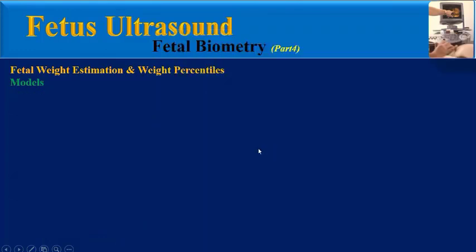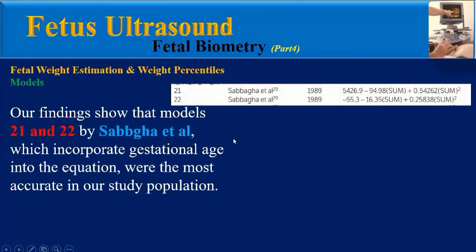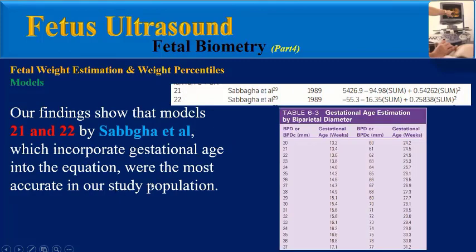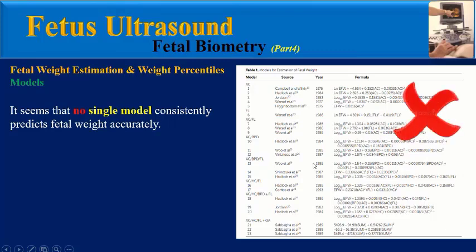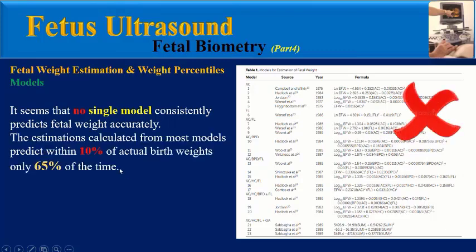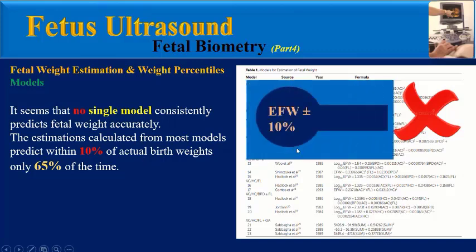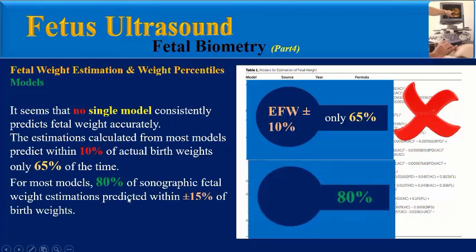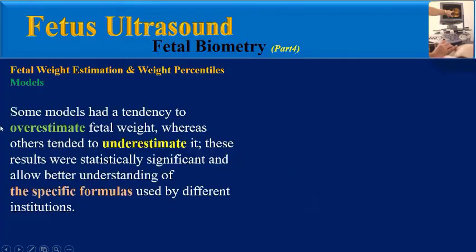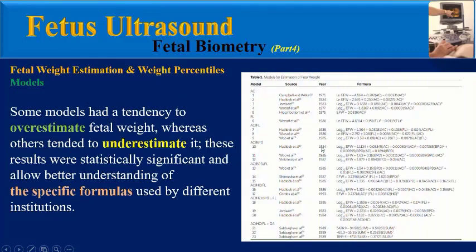The secondary aim was to determine the most accurate time — between 4 to 7 days or 3 days before delivery — for evaluating fetal weight. The findings showed that models 21 and 22 by Sabaha, which incorporate gestational age into the equation, were the most accurate. It seems that no single model consistently predicts fetal weight accurately; most models predict within 10% of birth weight only 65% of the time.